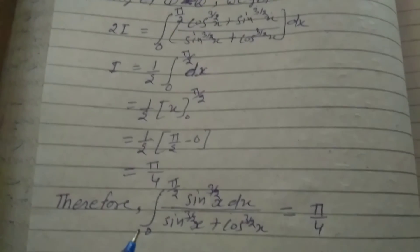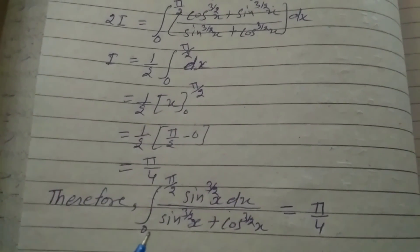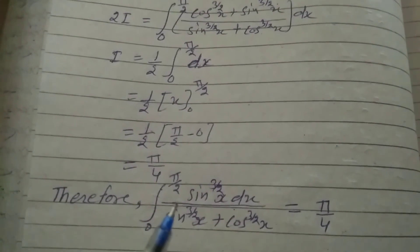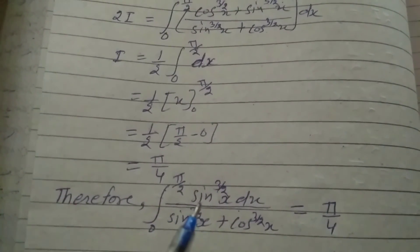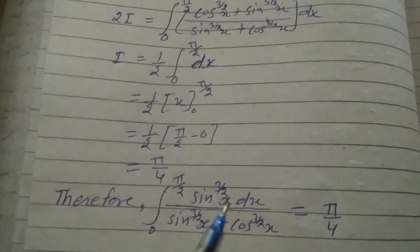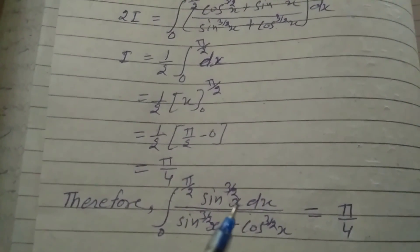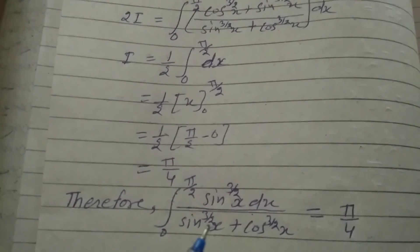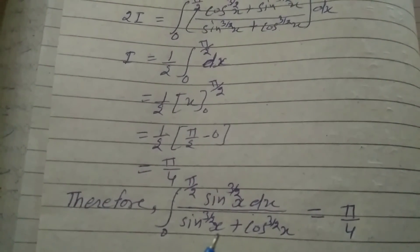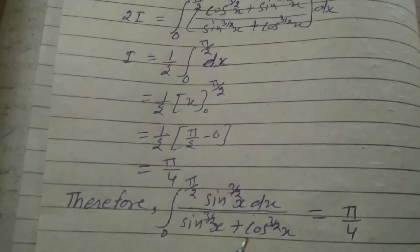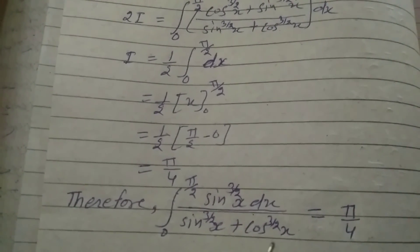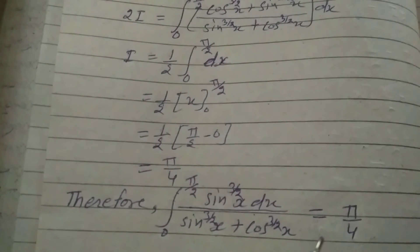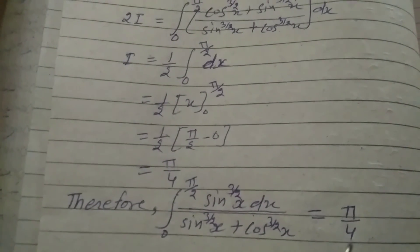Therefore, the integral from 0 to π/2 of sin^(3/2)(x) dx divided by sin^(3/2)(x) plus cos^(3/2)(x) is equal to π/4.